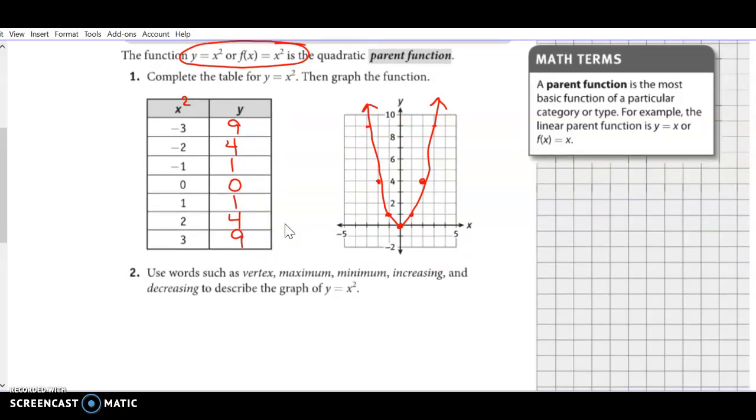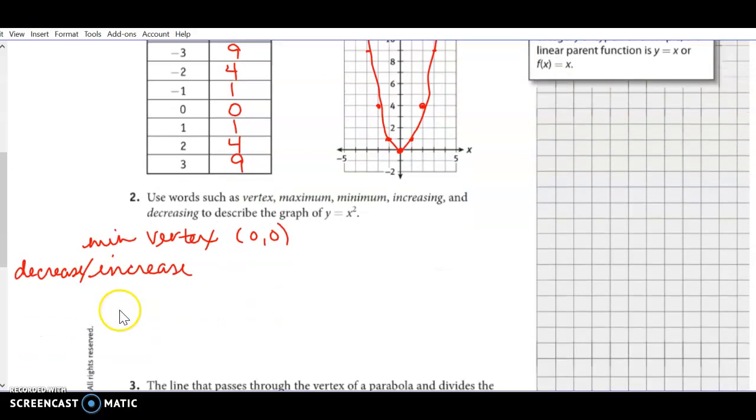Use your words such as vertex, max, min, increasing, decreasing. So the graph has a vertex always at (0, 0). It is also going to have a minimum vertex. It will decrease and then increase.